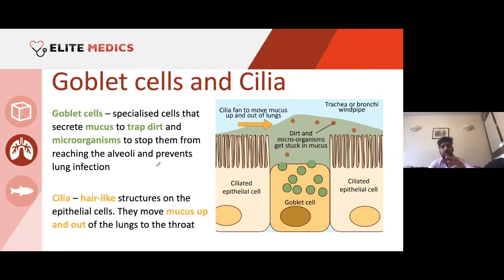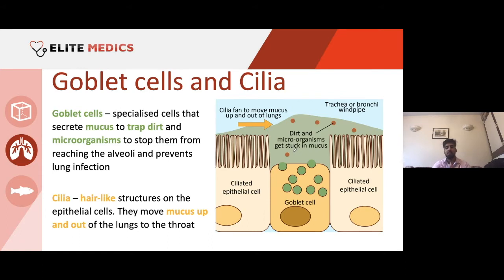What does the goblet cell do? It secretes mucus to trap dirt and microorganisms, especially pathogens. This links to the immune system — mucus is one of the primary defenses. We get mucus in the nose and within our respiratory tree as well. Have you ever had a phlegmy throat? That's because when you have an infection, your goblet cells are secreting loads of mucus to stick those pathogens together.